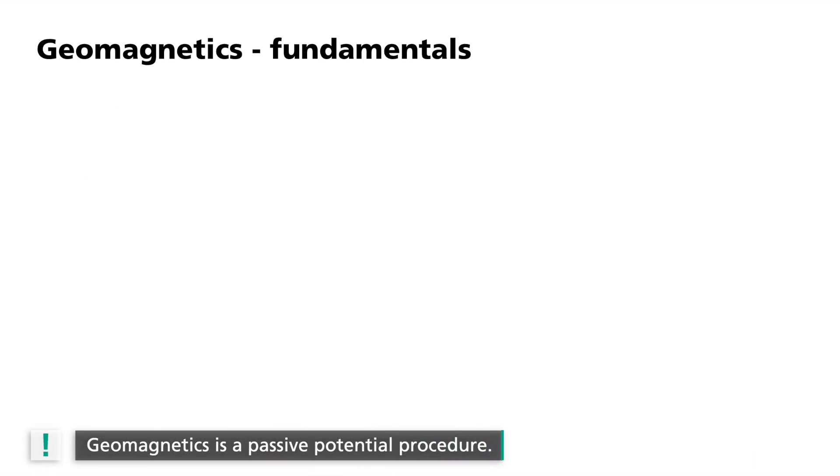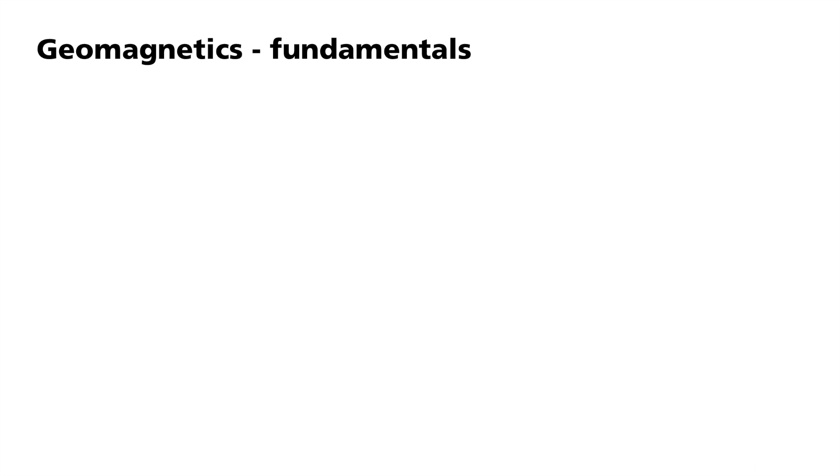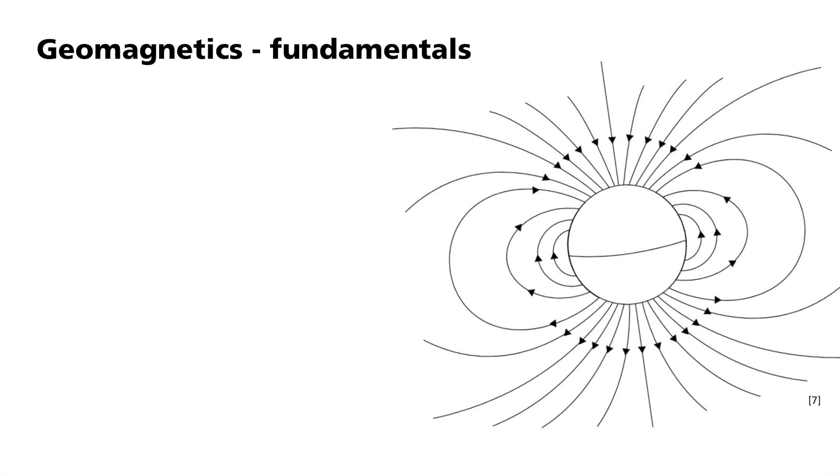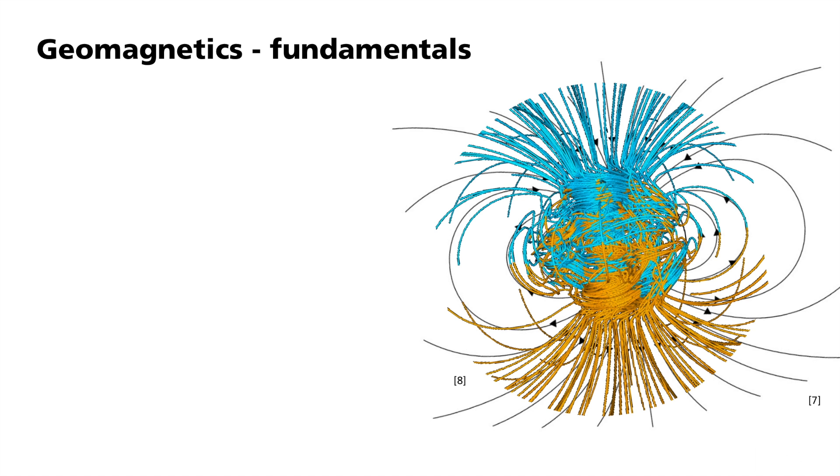Geomagnetics is a passive potential procedure. It uses the existing geomagnetic field and investigates variations that are caused by magnetized and magnetizable structures in the subsurface. The earth's magnetic field is primarily generated in the interior of the earth. Hot, electrically conductive rock is convected in the earth's outer core. Currents are induced by the existing weak magnetic field, which further reinforces the magnetic field itself. This self-exciting process is referred to as a geodynamo and this leads to the formation of the magnetic field as we know it on earth.